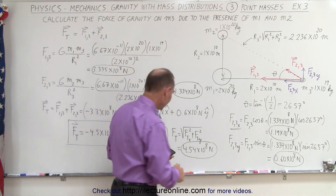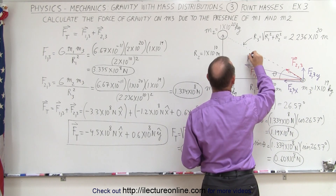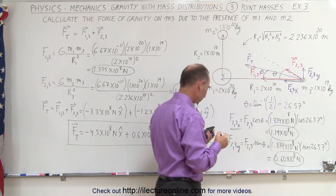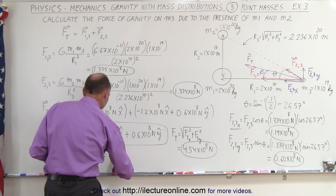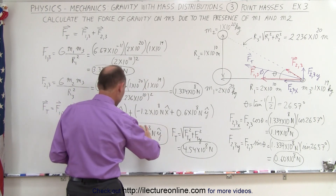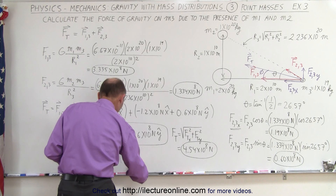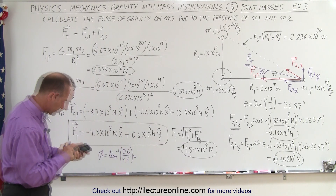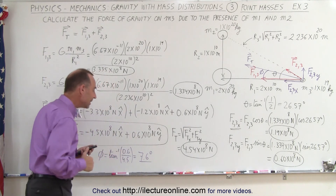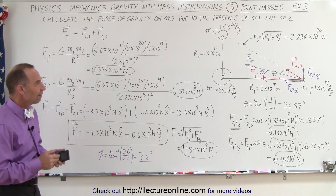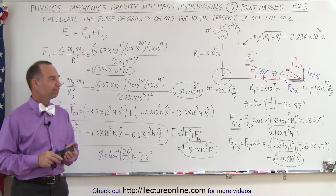Finally, if we want to find the angle phi of the total force relative to the negative x-axis, we use the arc tangent of the y component divided by the x component. That gives us 7.6 degrees relative to the negative x-axis, which is the direction of the total force on M3 due to the presence of M2 and M1. And that's how it's done.